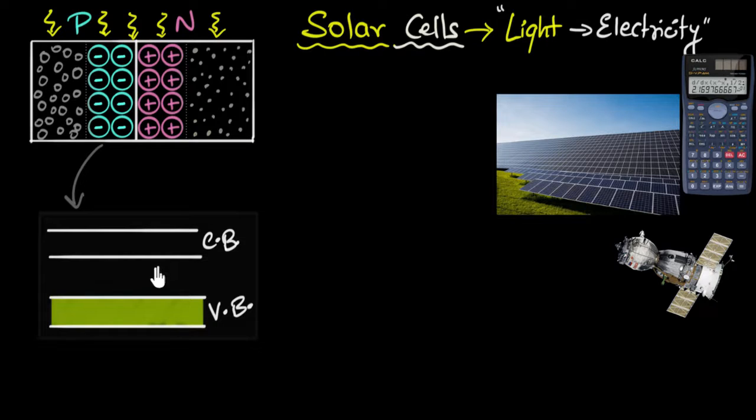But when light falls over here, and if the light photon has sufficient energy, if it has energy more than the band gap, then some of these electrons can absorb that energy and use that to jump into the conduction band.